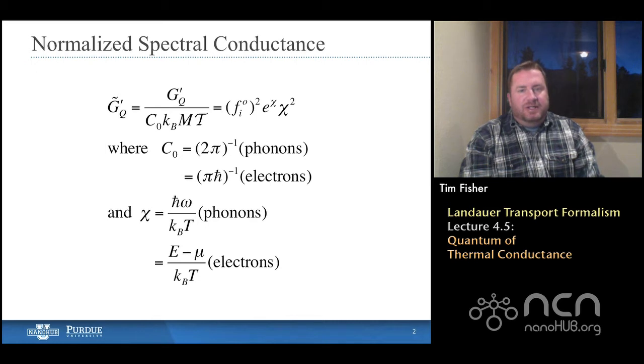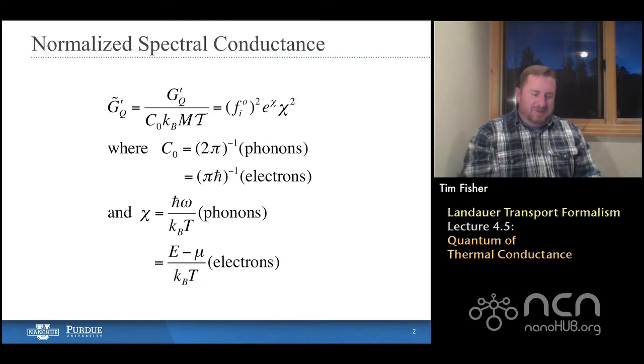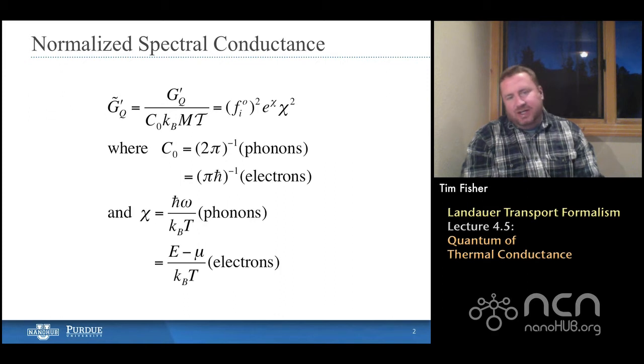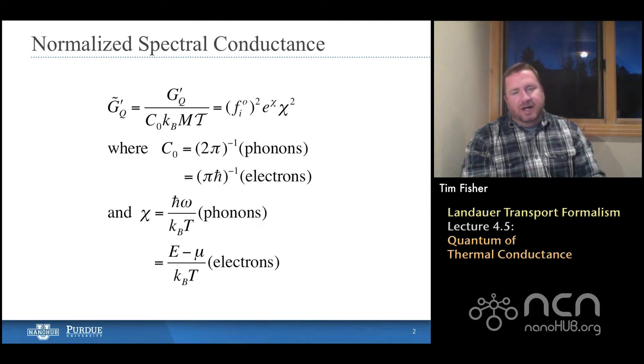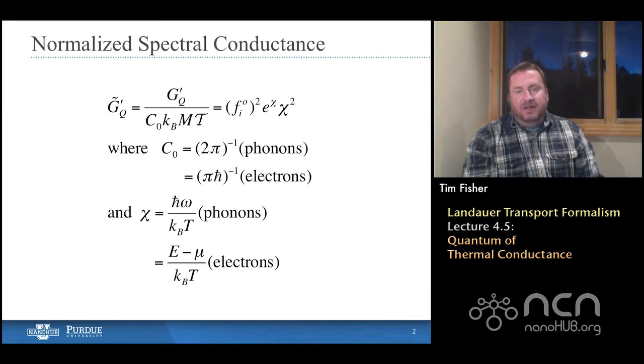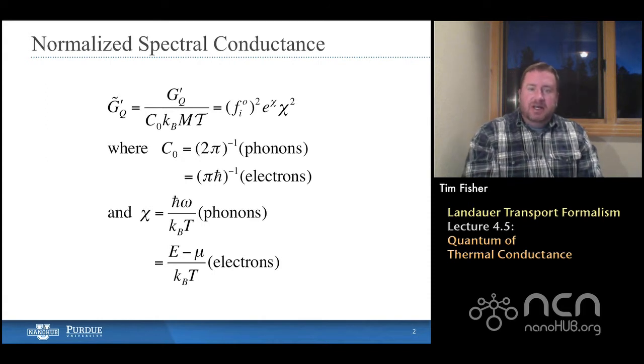First, I want to remind you about our normalized spectral conductance. The terminology is important to follow, and I apologize for all of the odd symbols that we have to use, but I think everything should hang together reasonably well if you think about G as being a conductance and Q as representing heat. The prime means spectral, the tilde means that it's normalized, and the normalization involves a constant, the number of modes and the transmission function.